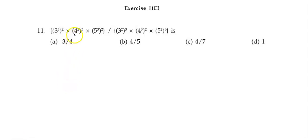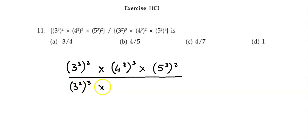Now here we have to find the simplified value for the given expression. The given expression is (3³)² × (4²)³ × (5³)² divided by (3²)³ × (4³)² × (5²)³ in the denominator.